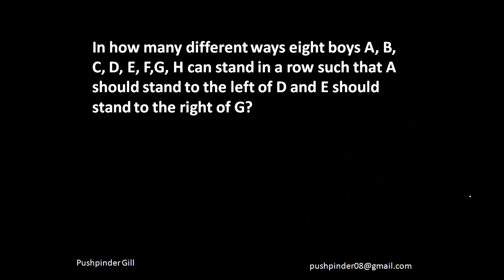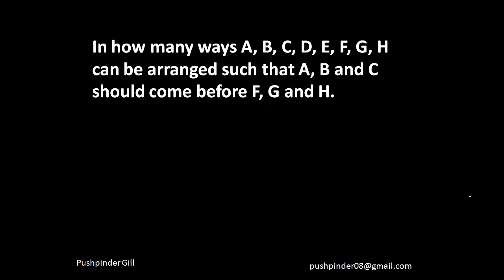In how many different ways can 8 boys A, B, C, D, E, F, G, H stand in a row such that A should stand to the left of D and E should stand to the right of G? We've done this one. Now let's look at: in how many ways can A, B, C, D, E, F, G, H be arranged such that A, B, C should come before F, G, H? This question can become really awkward if you make cases, but if you understand the approach: 8 letters can be arranged in 8 factorial ways. There is a condition on these 3 letters and those 3 letters — so I assume all 6 things to be identical, meaning they cannot interchange.